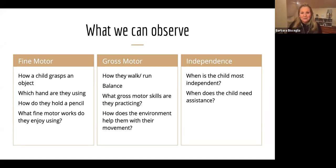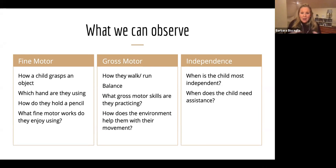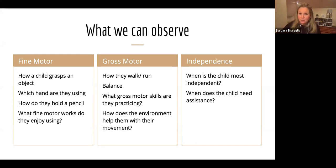We can jump over to gross motor — how are they running and walking, how is their balance, what gross motor skills are they practicing, what are they craving? Maybe they need a little maximum effort — bonus points if you remember from a previous Tuesday training tools session when we talked about gross motor and maximum effort. And really look at how the environment helps them with their movement: is it hindering something, or is there enough challenge for gross motor movements throughout their day?